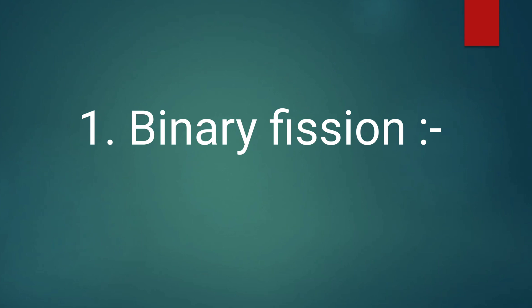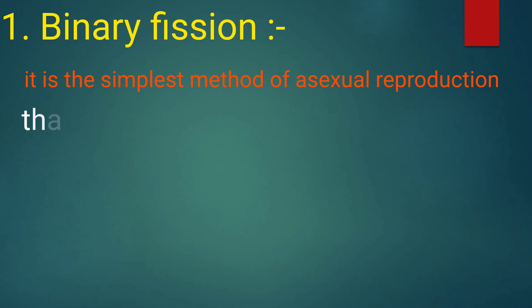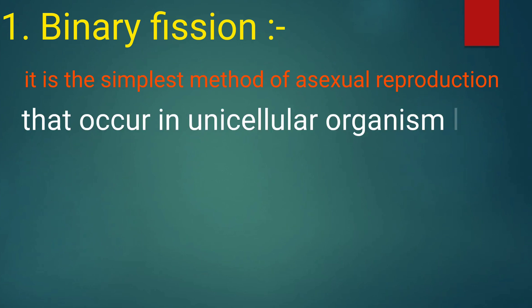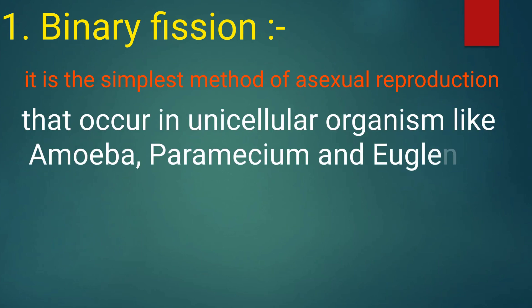First we discuss about binary fission. It is the simplest method of asexual reproduction that occurs in unicellular organisms like amoeba, paramecium, and euglena.